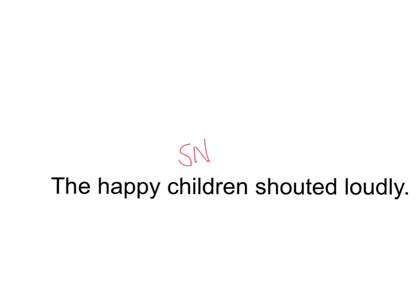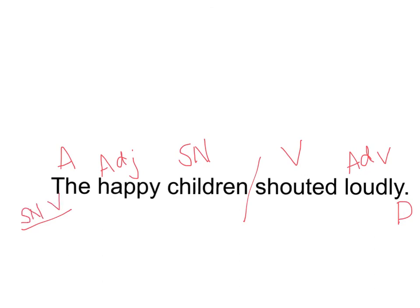Here's another sentence, going a bit faster: happy children shouted loudly. Who shouted loudly? Children — subject noun. What is being said about children? Shouted — verb. Children shouted how? Loudly — adverb. What kind of children? Happy — adjective. The is the article adjective. The sentence is separated between children and shouted. It is a declarative sentence, and at the beginning it's labeled subject noun, verb, pattern one.